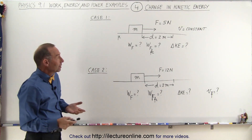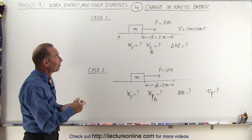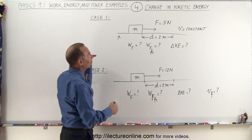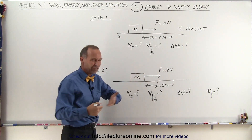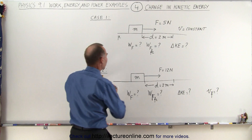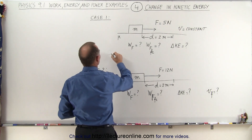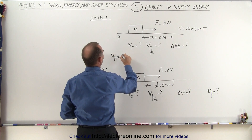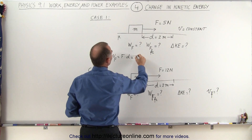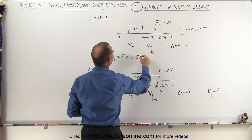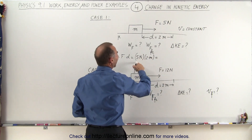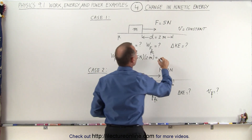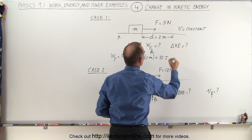The work done by the force can be defined as force times distance. Since the direction of the force and the direction of displacement are the same, we don't have to worry about the angle. So the work done by the force is equal to 5 newtons times 2 meters, which equals 10 newton-meters, or 10 joules.